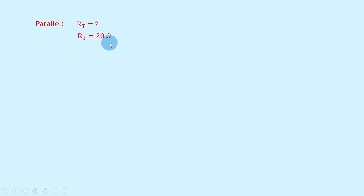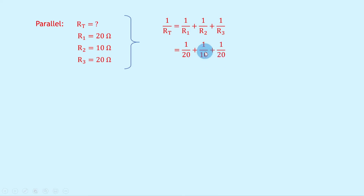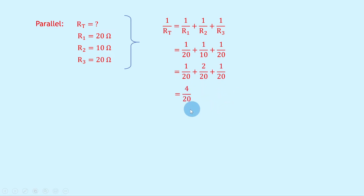Now we can do the parallel combination. R1 is 20 ohms, R2 is 10 ohms, and R3 is 20 ohms. Writing down our equation: 1 over RT equals 1 over 20 plus 1 over 10 plus 1 over 20. Using the lowest common denominator method, I multiply the top and bottom of 1 over 10 by 2, giving 1 over 20 plus 2 over 20 plus 1 over 20, which simplifies to 4 over 20. Flipping both sides gives RT equals 20 over 4, which is 5 ohms.